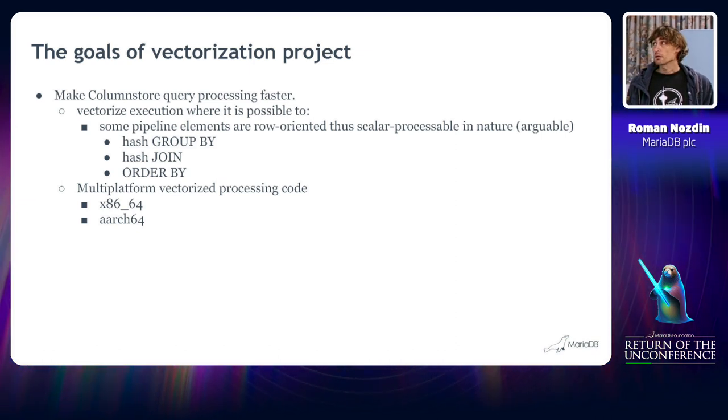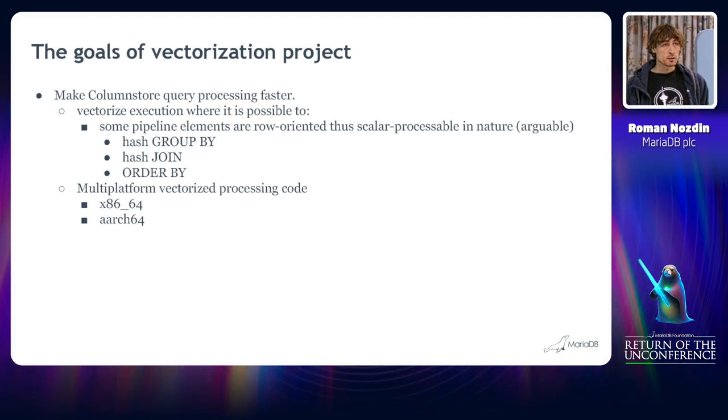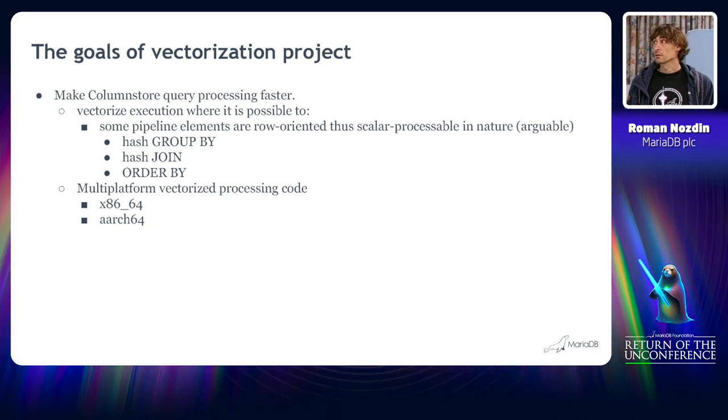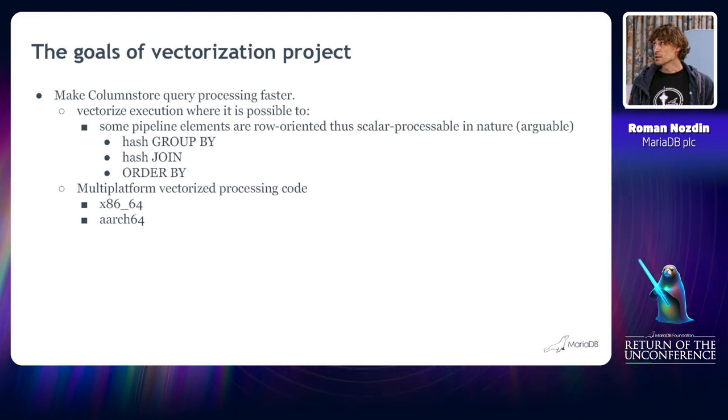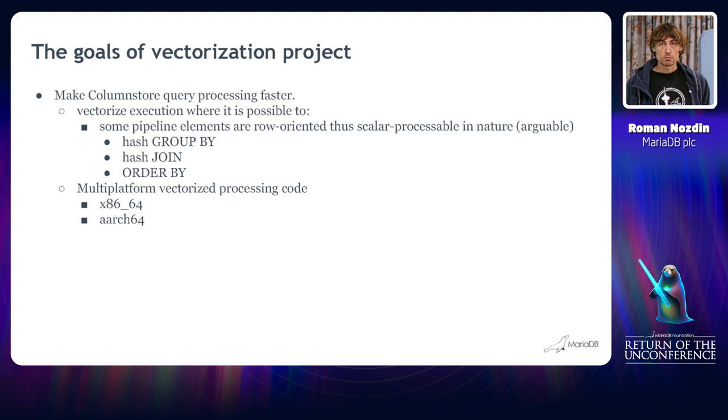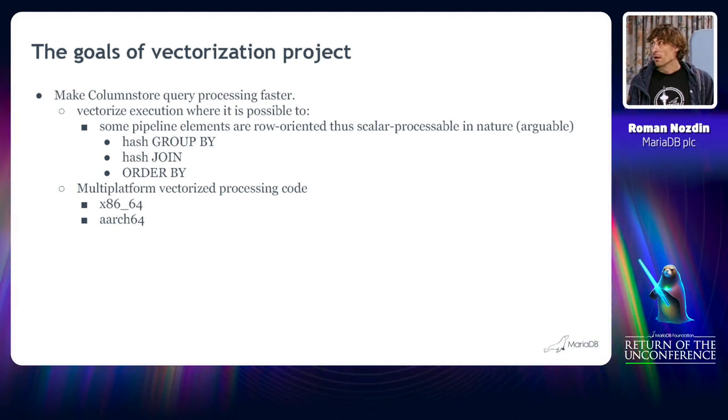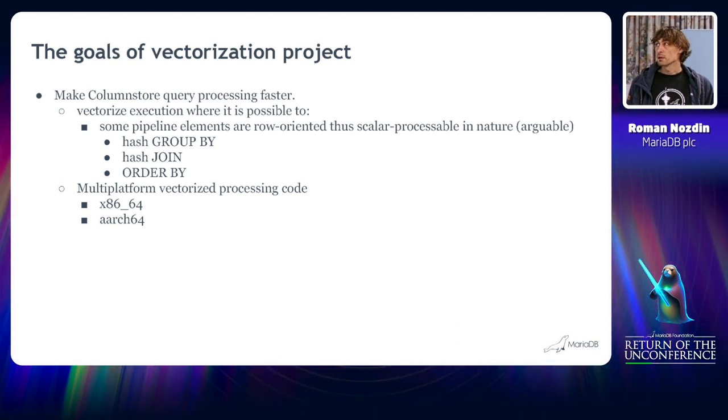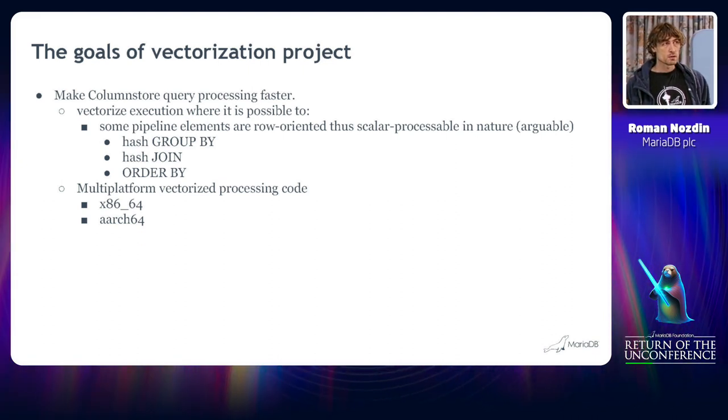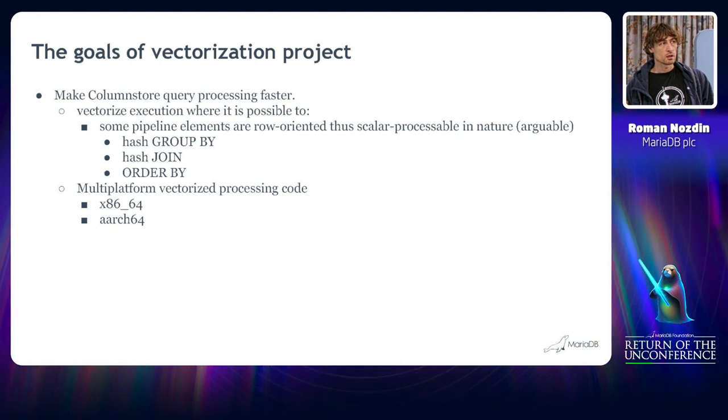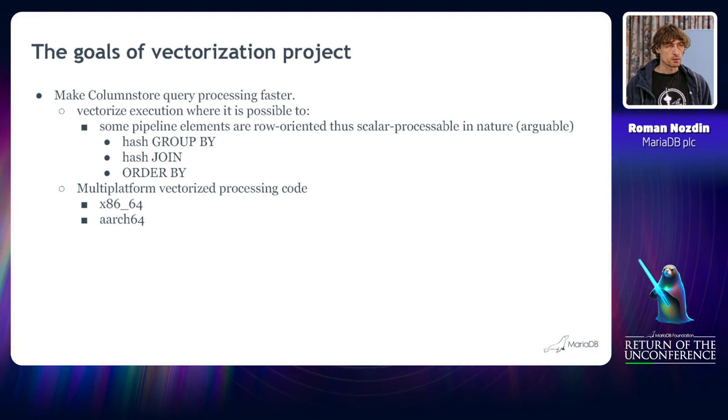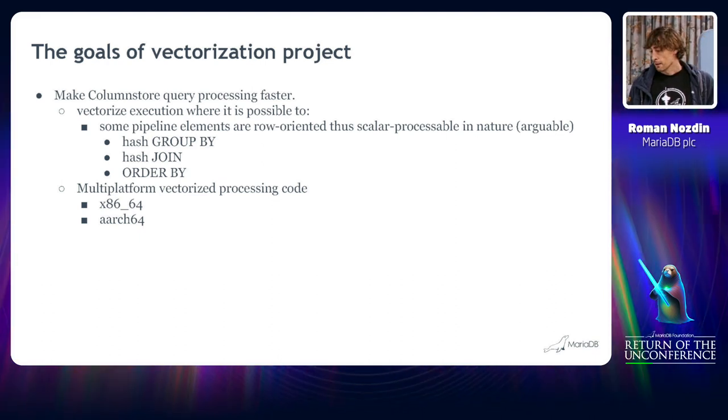And where it is possible is an important part. Just because there are some SQL operators that in my opinion naturally are scalar oriented or row oriented. It is still arguable. But in my opinion, hash group by, hash join and order by, they are all row oriented. That means that it is easy or has less overhead to process them when the data is in a row format, not in a columnar one.